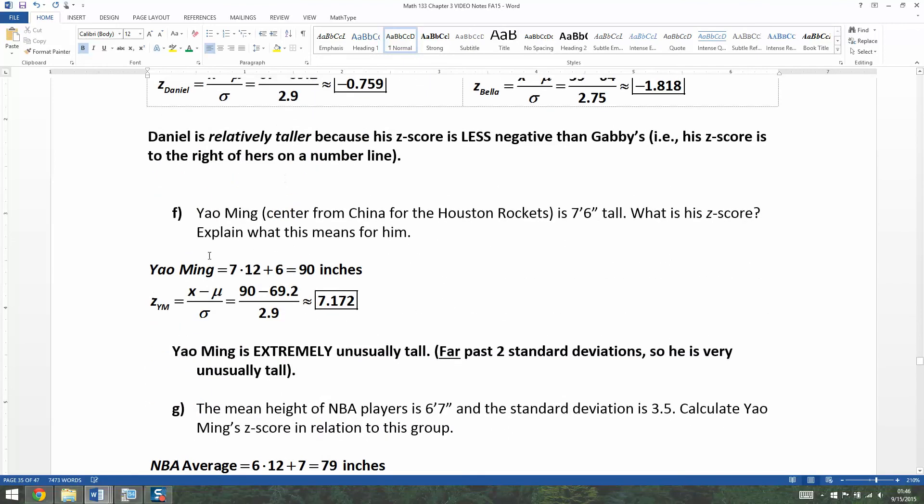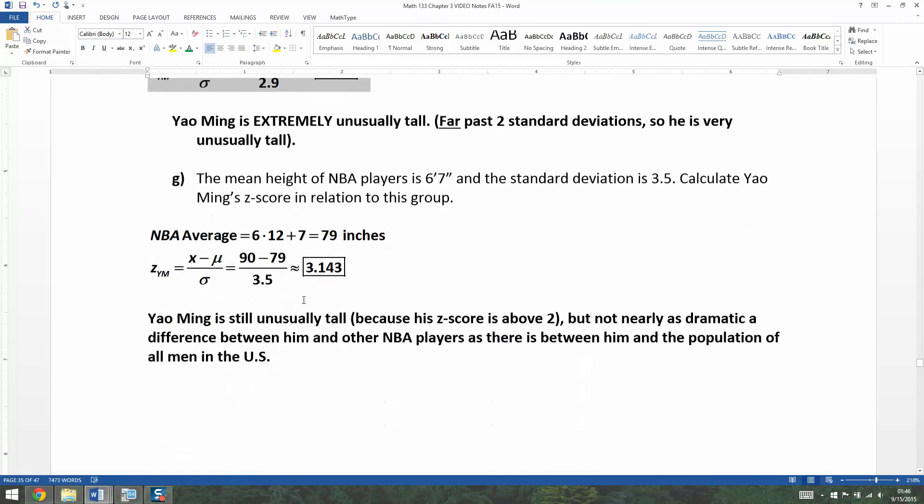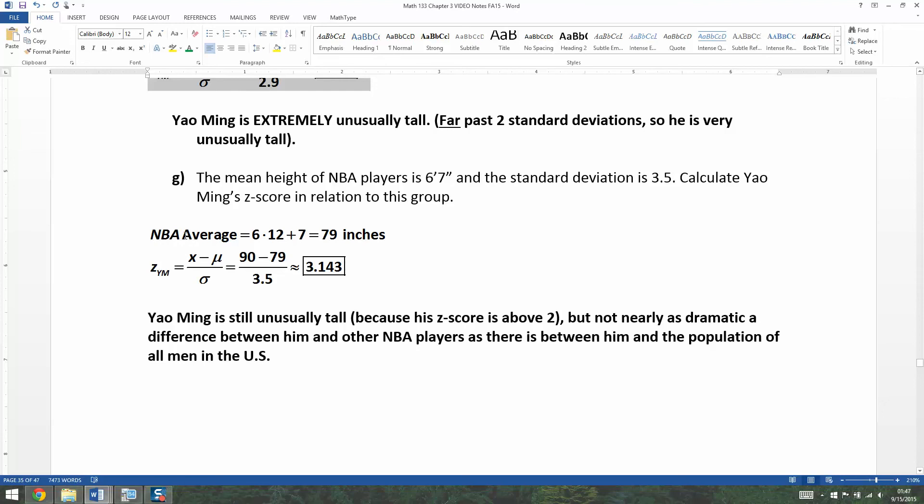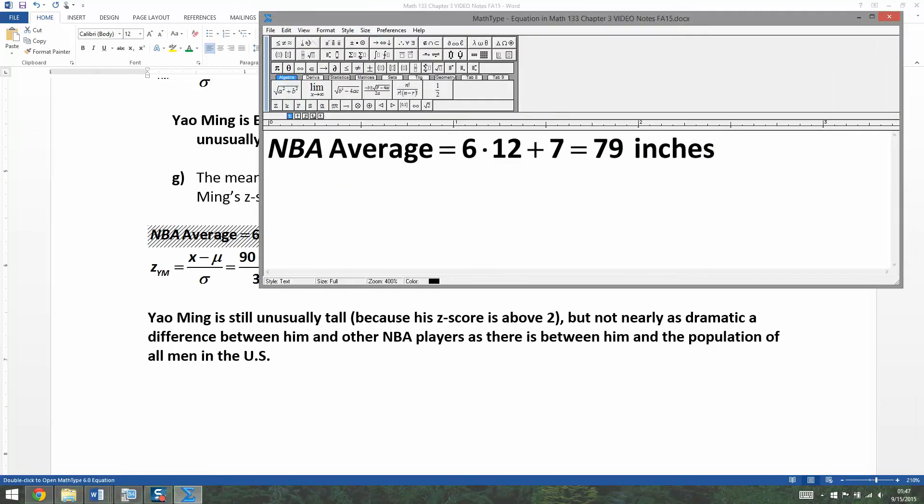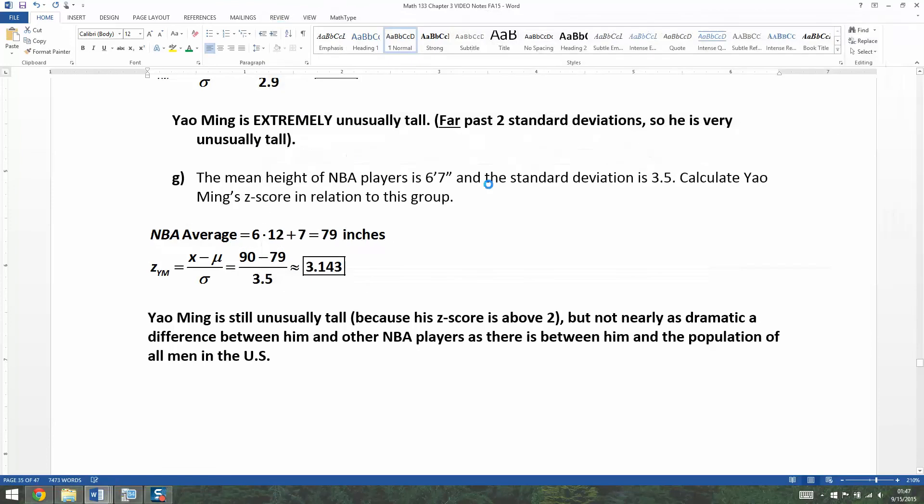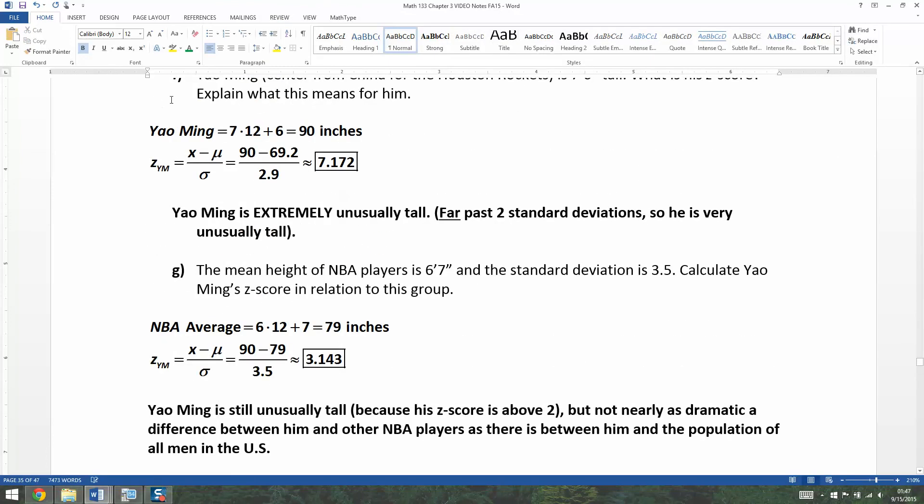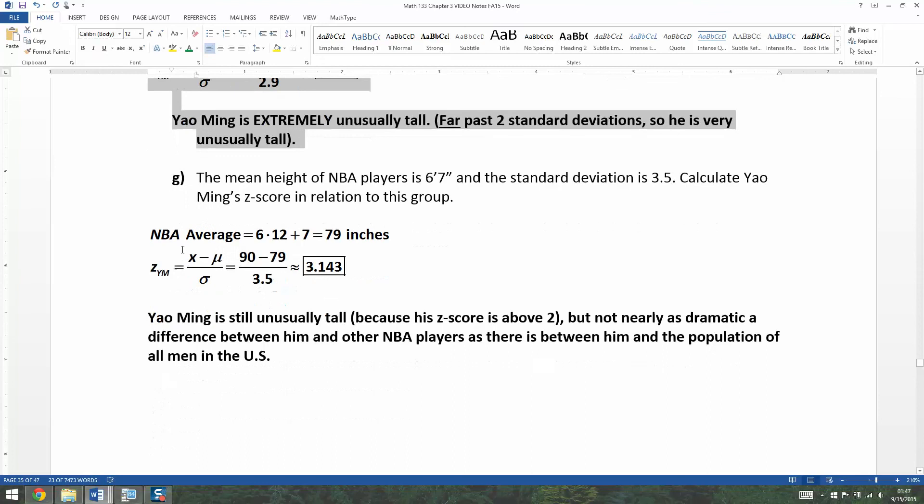All men in the U.S., his Z-score is 7.17, so very, very, very tall. On an NBA court, he's still tall, but he's not quite as unusually tall as he is if he just walks down the street. Quite frankly, a lot of NBA players are unusually tall when you compare them to the whole of society. But when you put them on the NBA court, they don't appear so tall because they're around a bunch of other tall players.